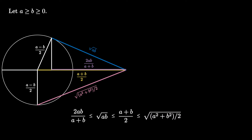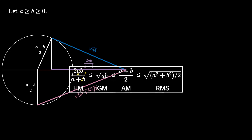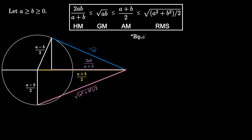2ab over (a plus b) is the harmonic mean, the square root of (a times b) is the geometric mean, (a plus b) over 2 is the arithmetic mean, and the square root of (a squared plus b squared) over 2 is the root mean squared. The resulting set of inequalities is known as the mean inequalities. We note that we get equality throughout if and only if a equals b — in this case, the entire picture collapses to a single line segment representing all of the values.